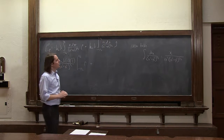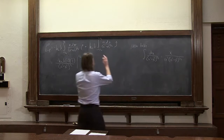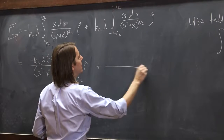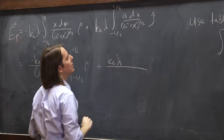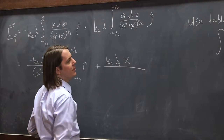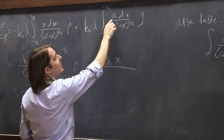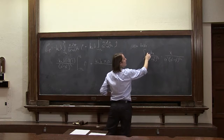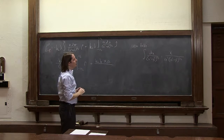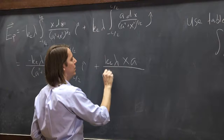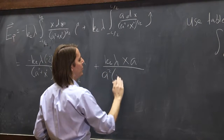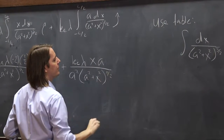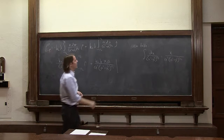I got that from a table. Applying that to our j-hat integral: we have k_e lambda along for the ride. The formula says we put x in the numerator — that's fine. We also had an a along for the ride, so we include that a, since it's just another constant. Then in the denominator we have a squared times (a squared plus x squared) to the 1 half. So there we used that standard integral, evaluated from minus L over 2 to L over 2.